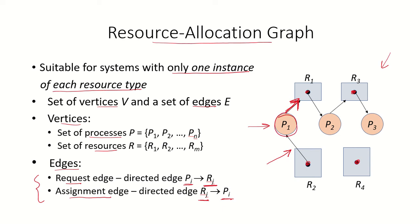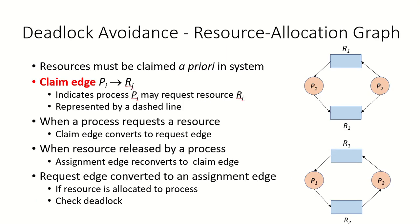Now let's see how a resource allocation graph can be used for deadlock avoidance. Avoidance algorithms require that each process must declare the resources they want prior to execution — these resources must be claimed by the processes a priori. That means before they begin execution each process declares how many resources it wants. Apart from the assignment and request edges, for avoidance algorithms we have one more edge called the claim edge.